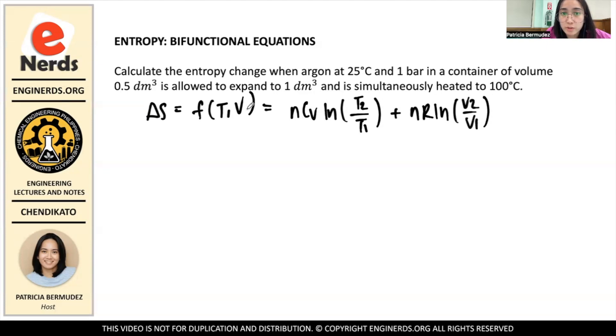So you first assume that your volume is constant, and then you measure the change in terms of the change in temperature. And then after that, you assume that the temperature is constant, so you measure the change according to volume, and then you add the two together.